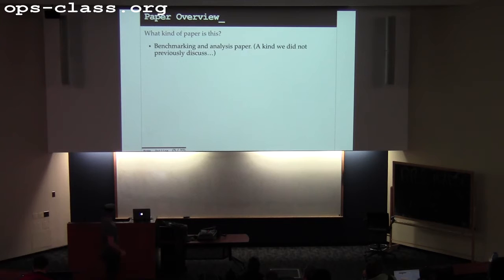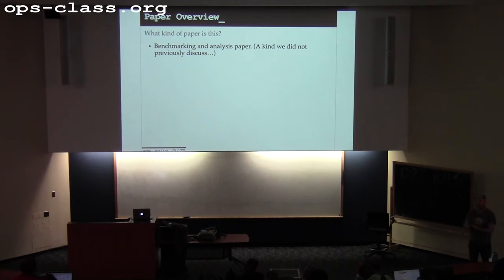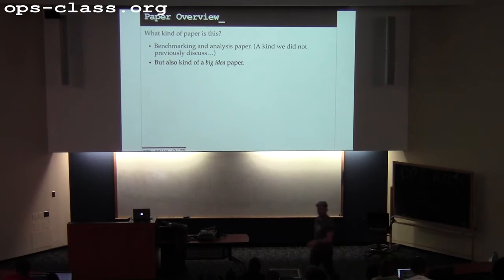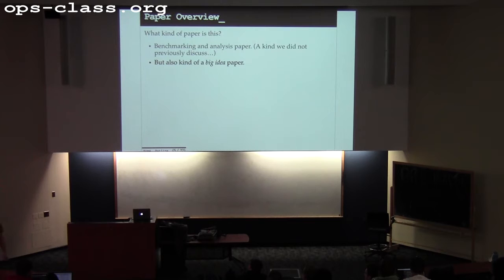Now for the scaling paper. This group of scientists was working in this area for years, building a bunch of different systems. On some level this paper looks like a benchmarking paper, but it's also in a sneaky way a 'big idea' paper. Previous to this, the parallel and distributed operating systems group at MIT — PDOS — had been working in this space.